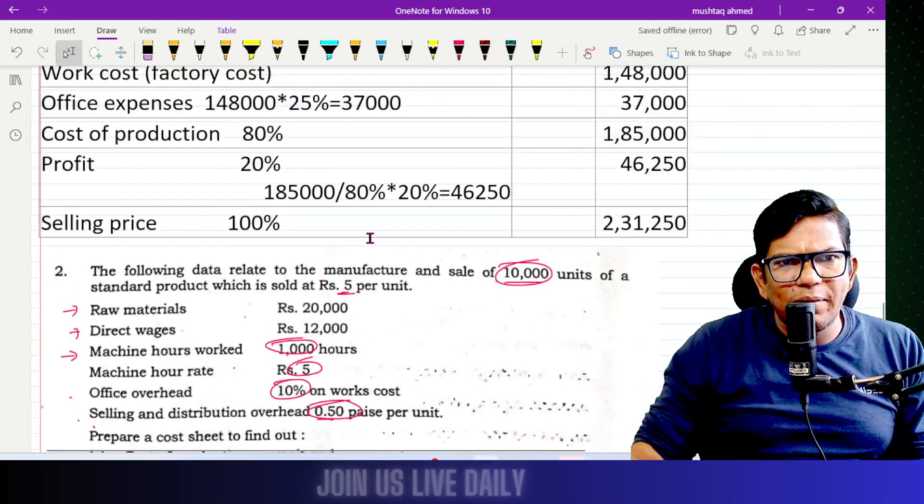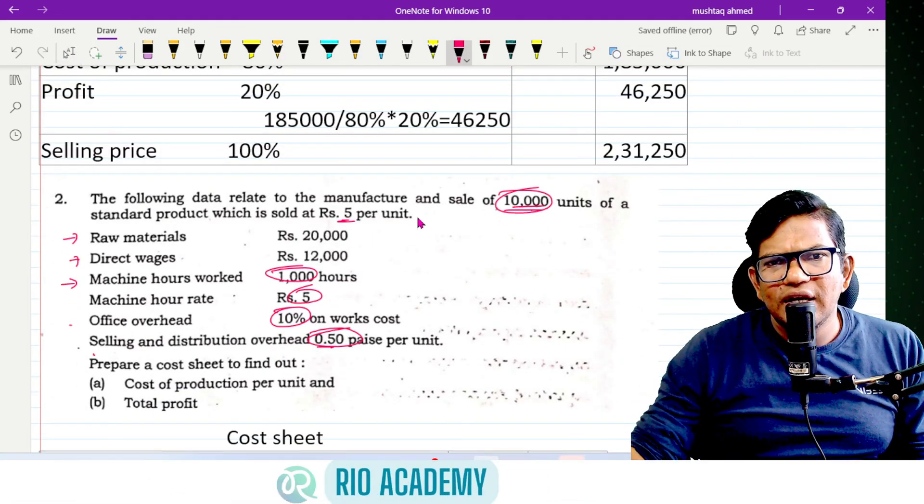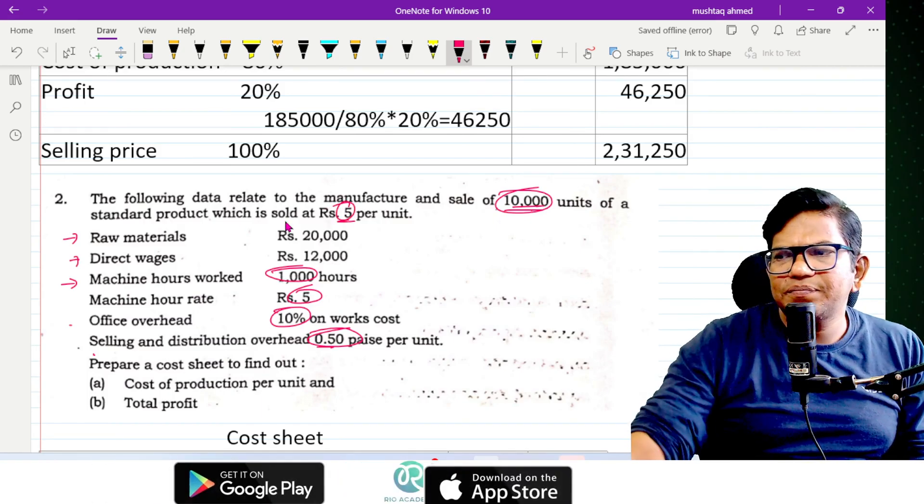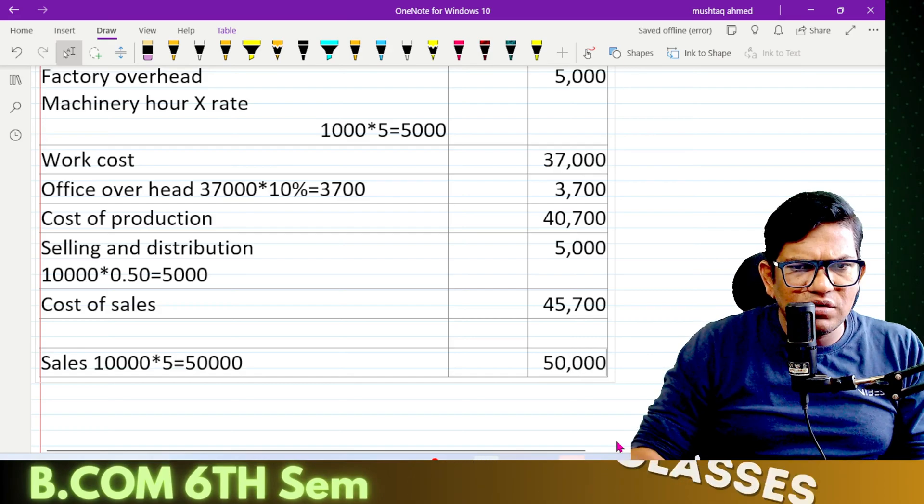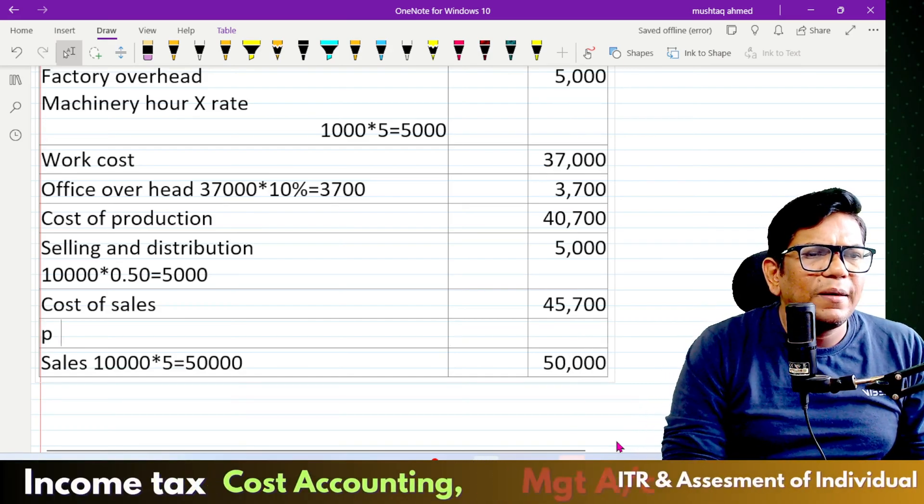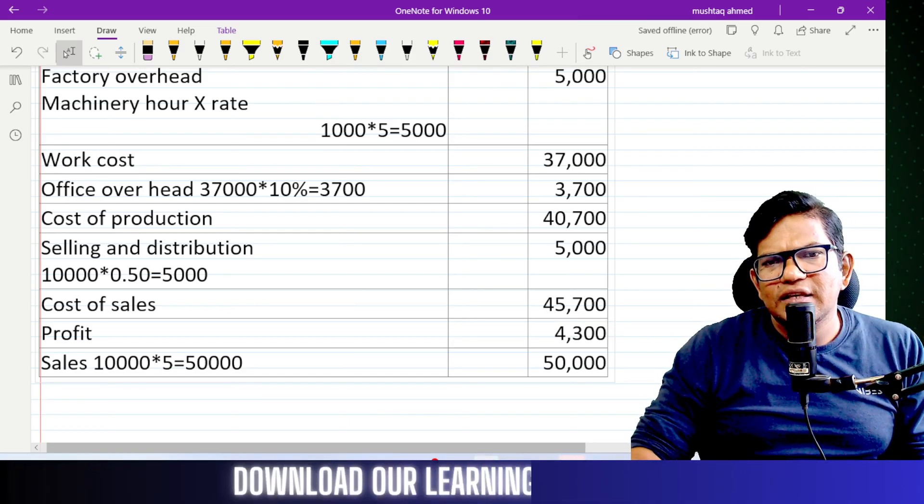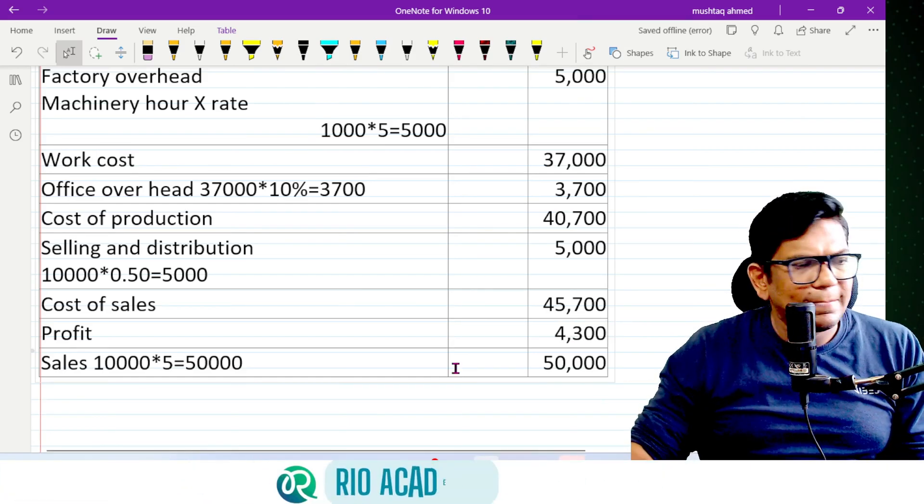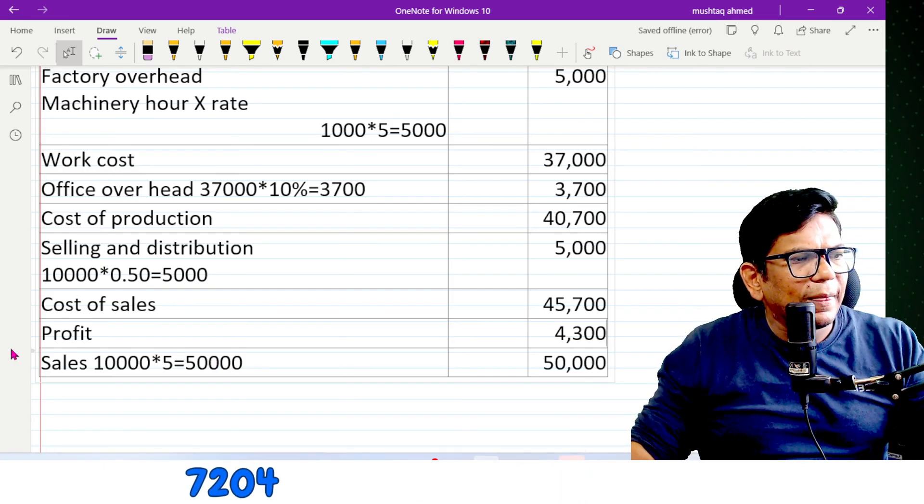which equals 50,000. So your profit is: profit equals 4,300. Is that clear?